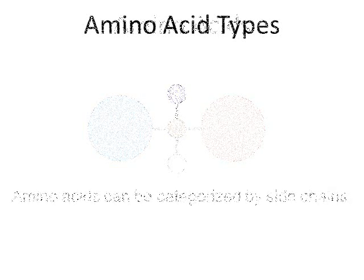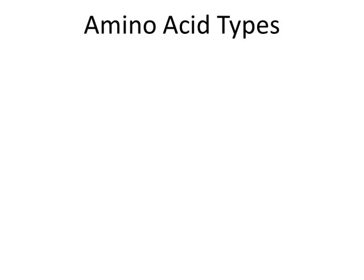Let's look at some examples and see how they can be categorized. We'll start with an amino acid called isoleucine. If you notice in the side chain of isoleucine there are two terminal methyl groups. That makes this a hydrophobic or nonpolar amino acid. Several other amino acids fit into this category.